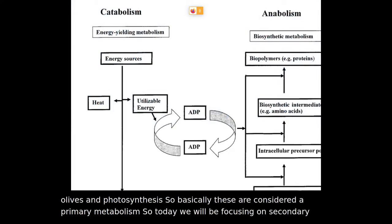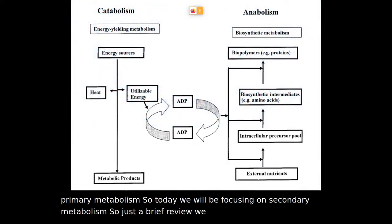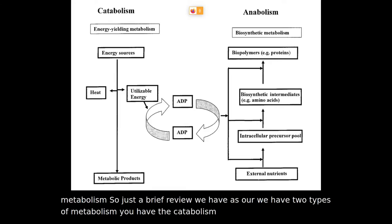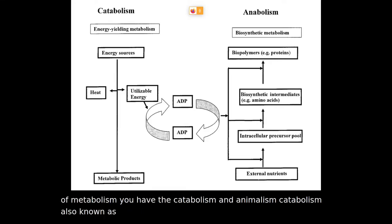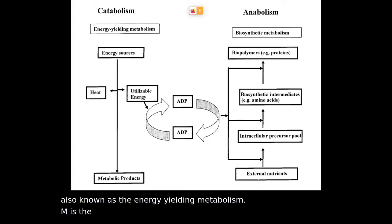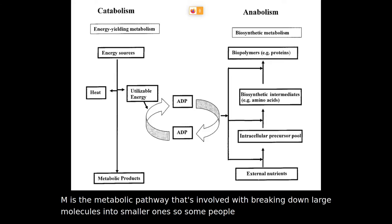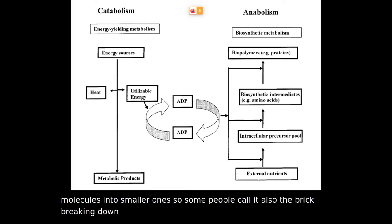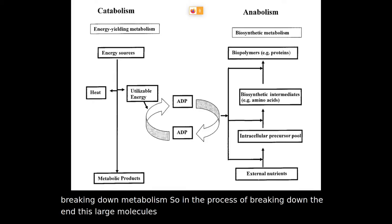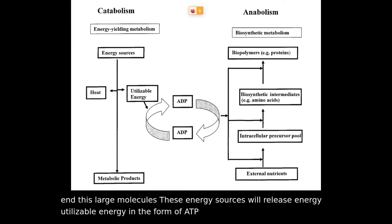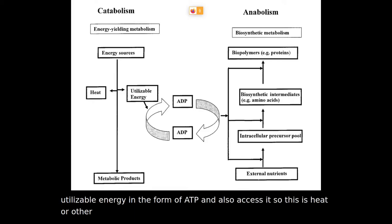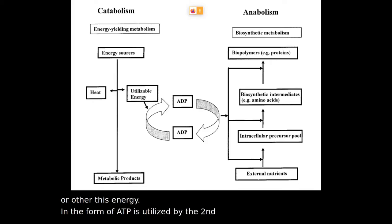As a brief review, we have two types of metabolism: catabolism and anabolism. Catabolism, also known as the energy-yielding metabolism, is the metabolic pathway involved with breaking down large molecules into smaller ones. In the process of breaking down these large molecules, we release energy — utilizable energy in the form of ATP, and also excess heat. This energy in the form of ATP is utilized by the second type of metabolic pathway, which is anabolism.